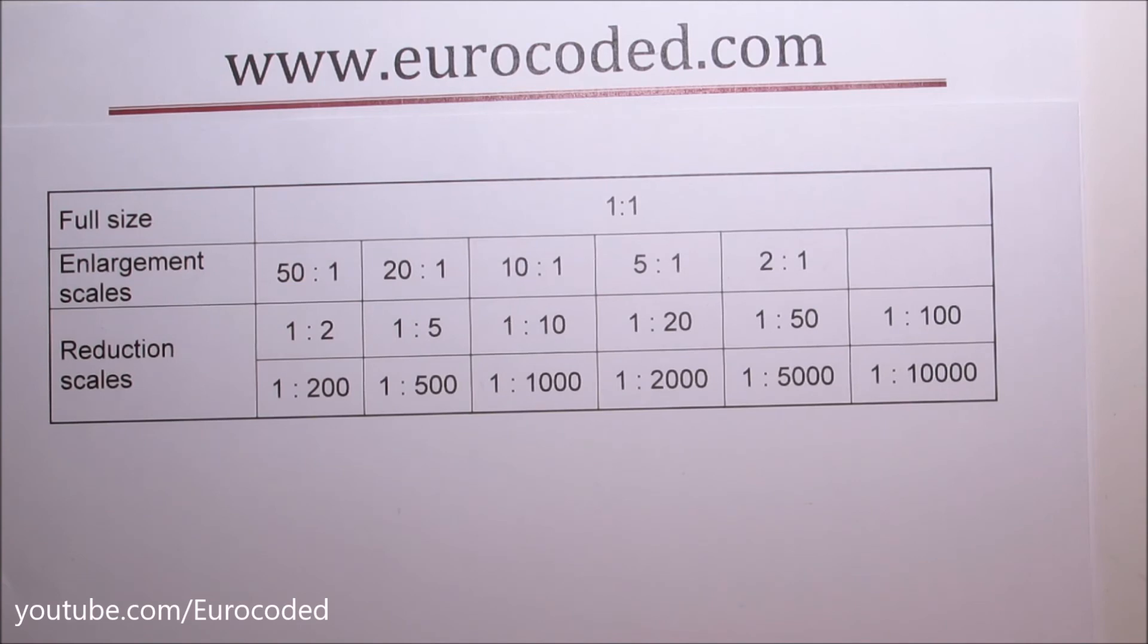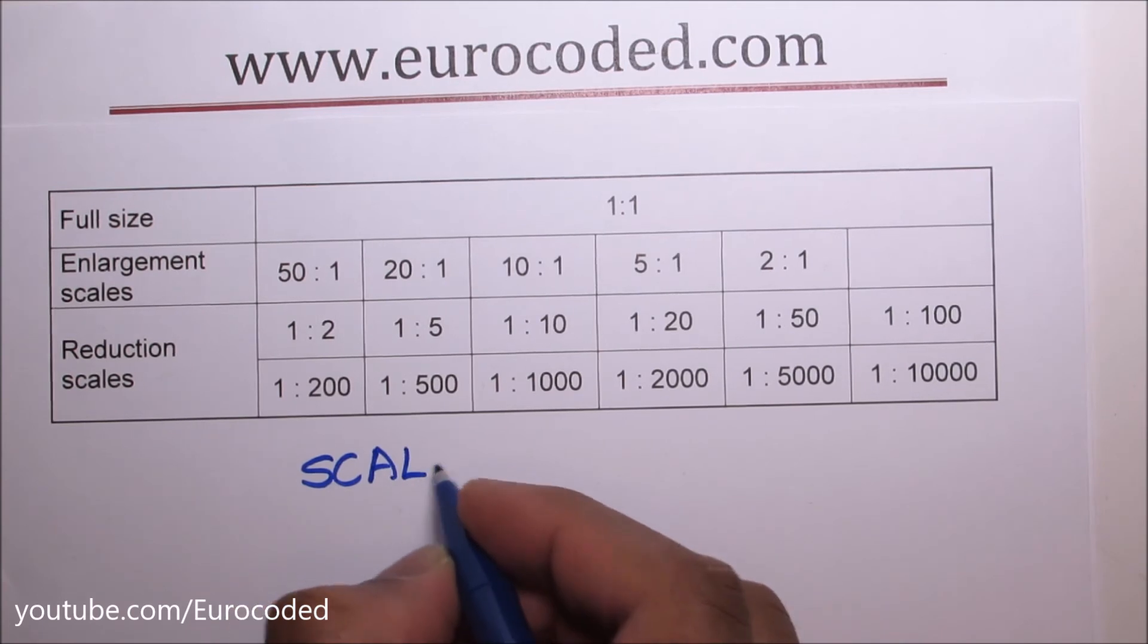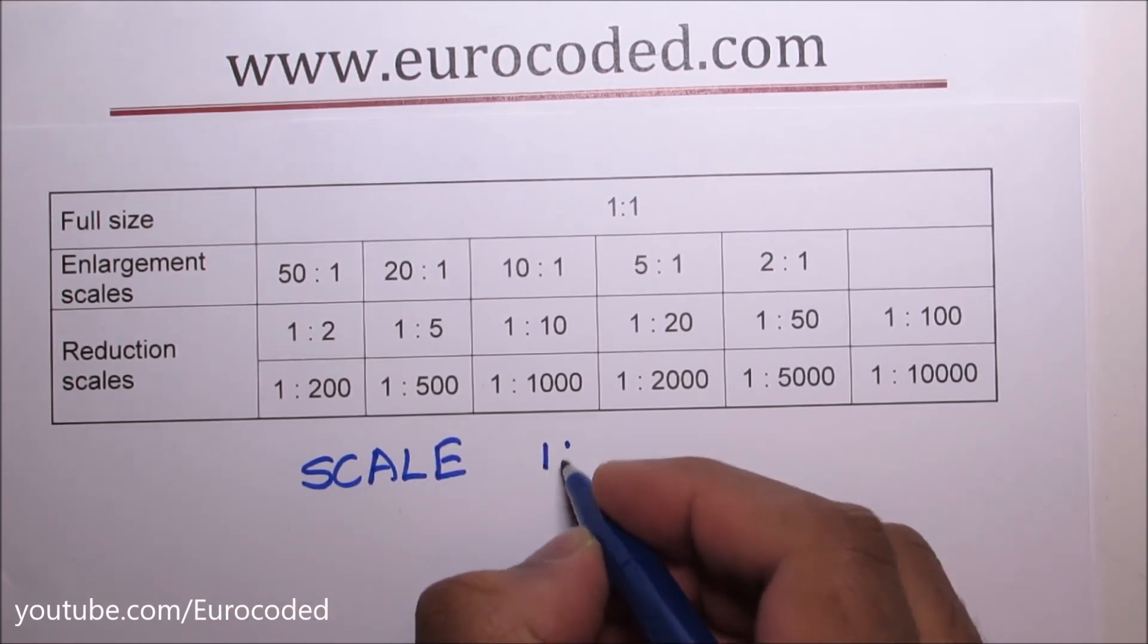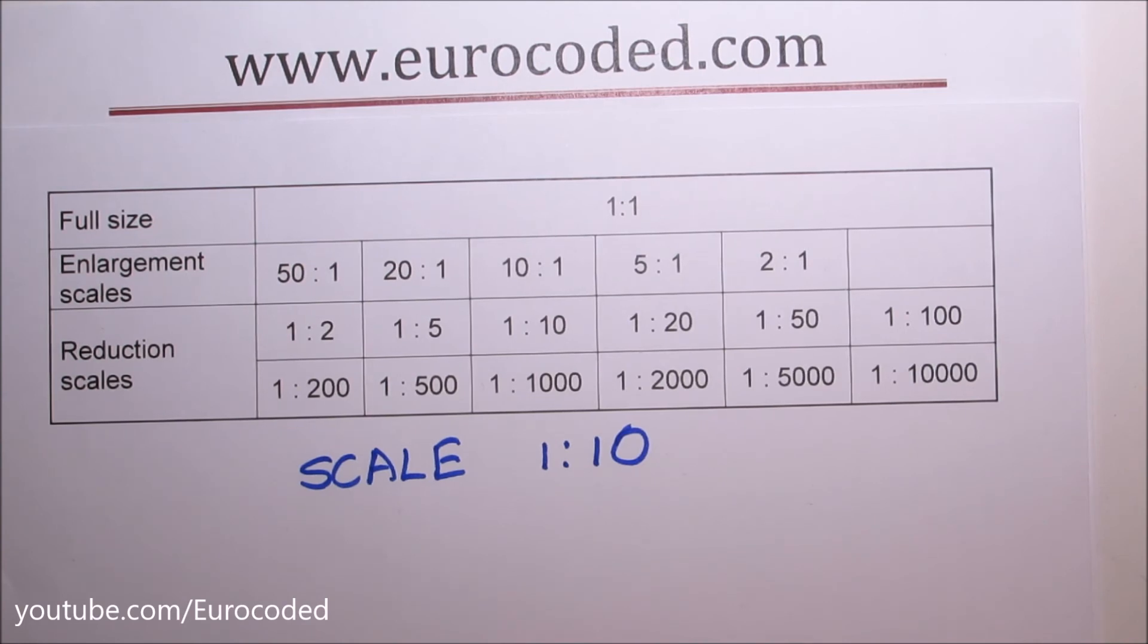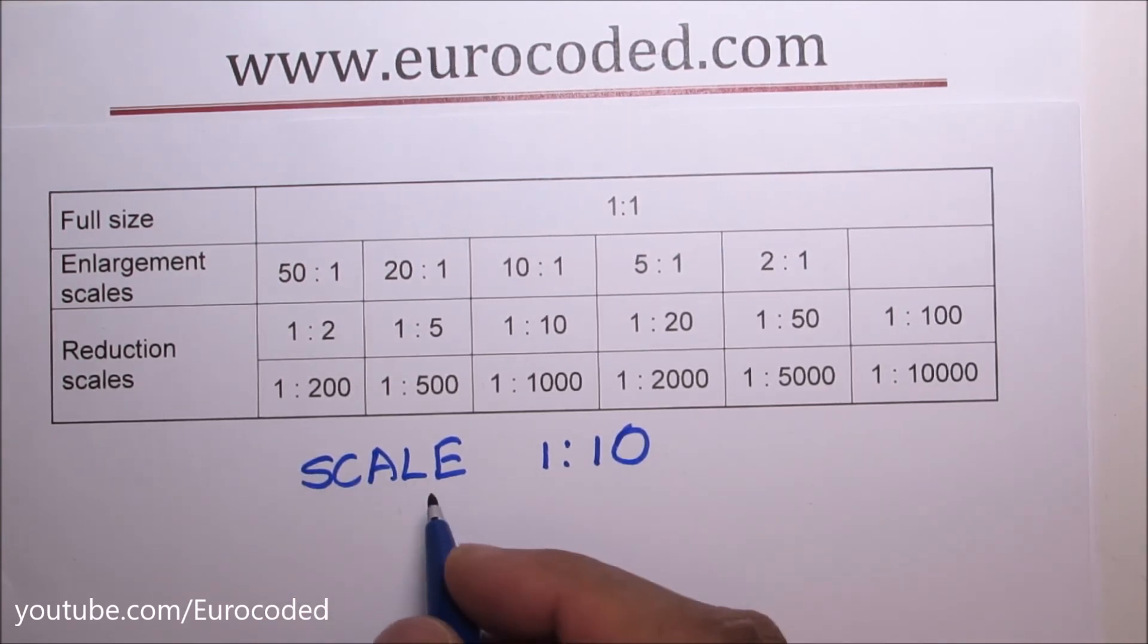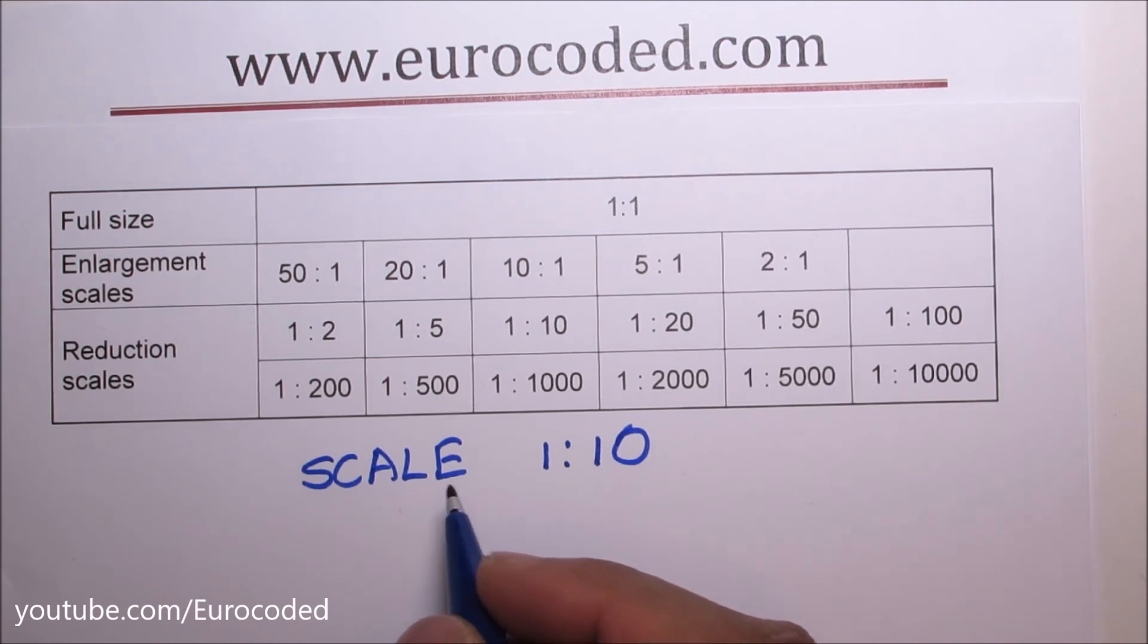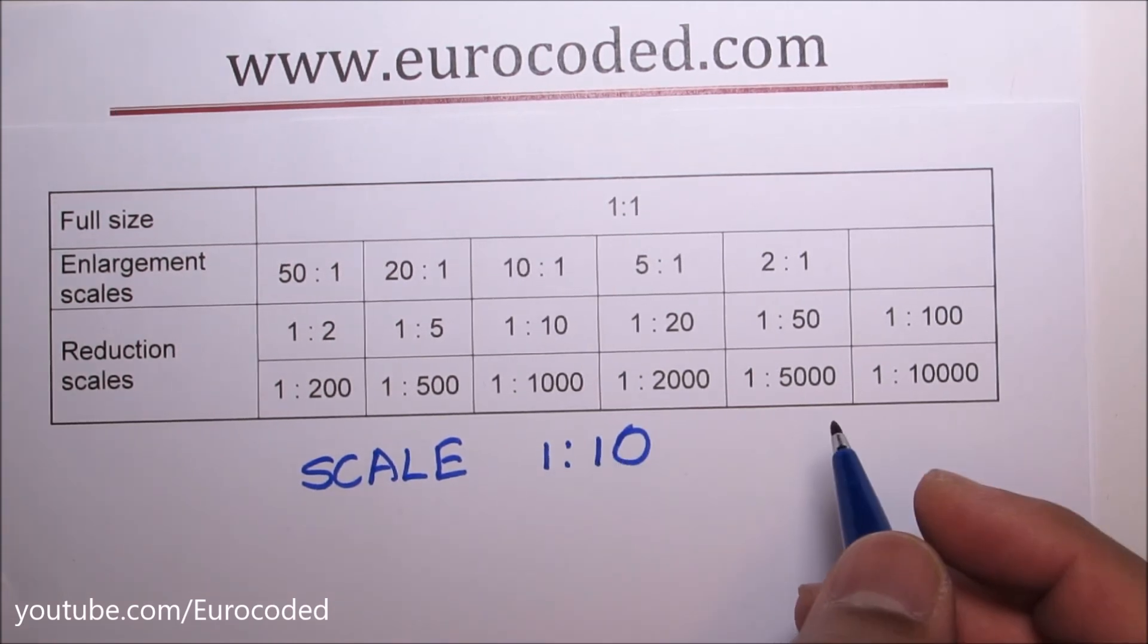The complete designation of a scale should be written with the word scale followed by the indication of its ratio. As an example we can write scale 1 to 10. If there is no likelihood of misunderstanding you can obviously get rid of the word scale. However you should remember the complete designation should have the word scale followed by the actual scale notation.